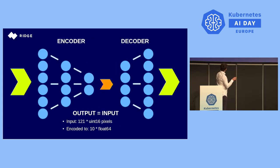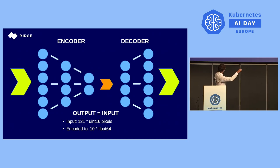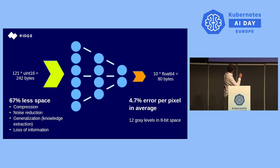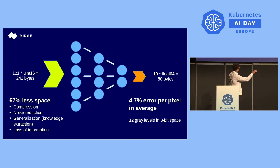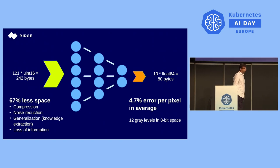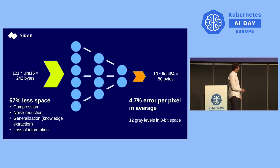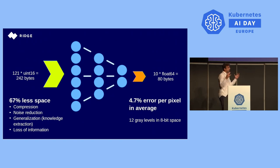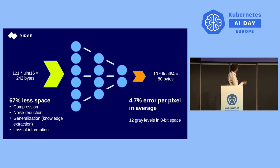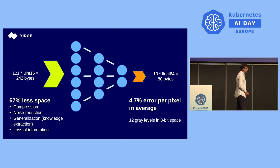You'll see that this neural network may be divided into two parts: one is the encoder, and the second is the decoder. Let's discuss the encoder in more detail. We feed 121 pixels on the input and get 10 64-bit float numbers, which gives us 242 bytes on the input and 80 bytes on the output. You immediately see that the information provided by the image must be compressed — the neural network must return 67% less information by byte count. These are the key advantages of the autoencoder.